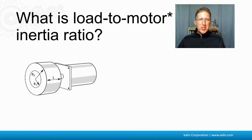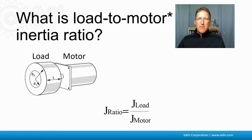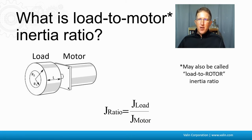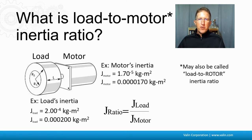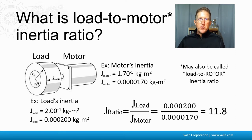So what is the load-to-motor inertia ratio? If you have a motor with a load on it, you have the ratio of the load inertia over the motor inertia. Note that this is sometimes called the load-to-rotor inertia ratio, because the rotor inside the motor is what actually spins. For example, with some typical values, that ratio might come out to 11.8. J is the standard terminology for inertia.